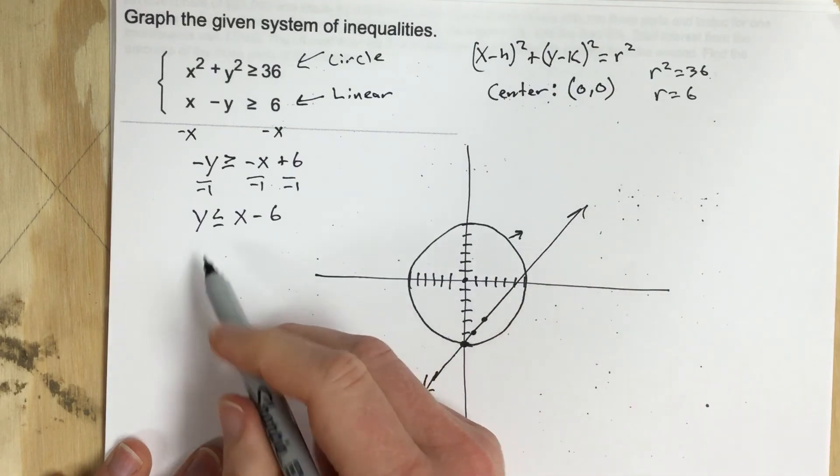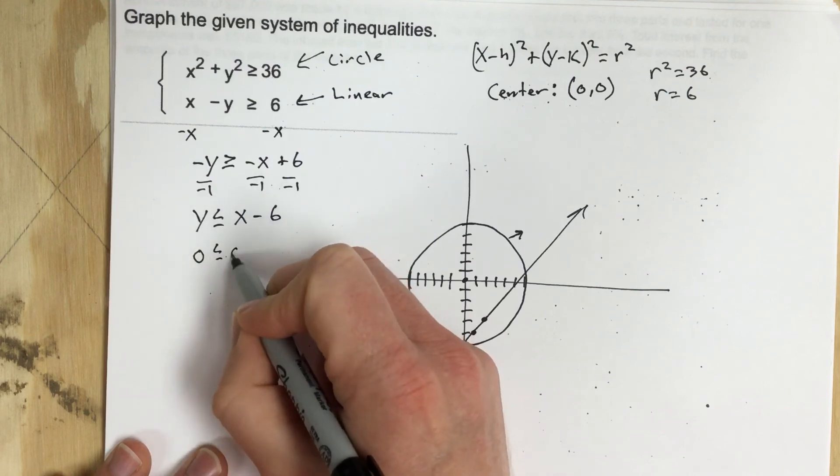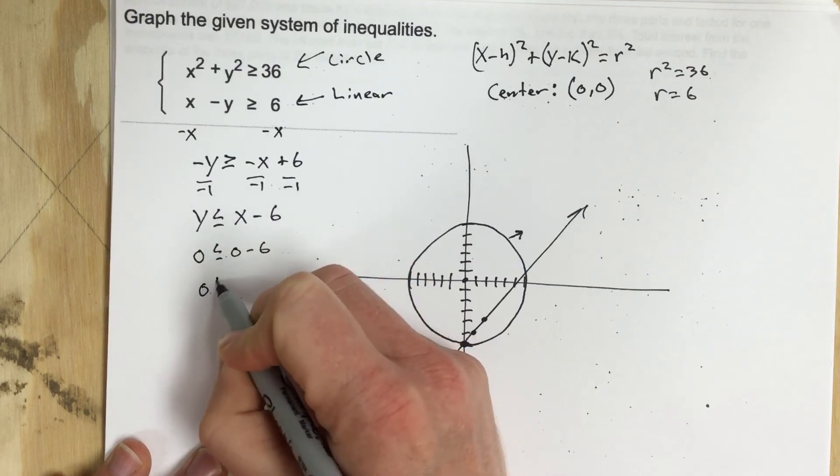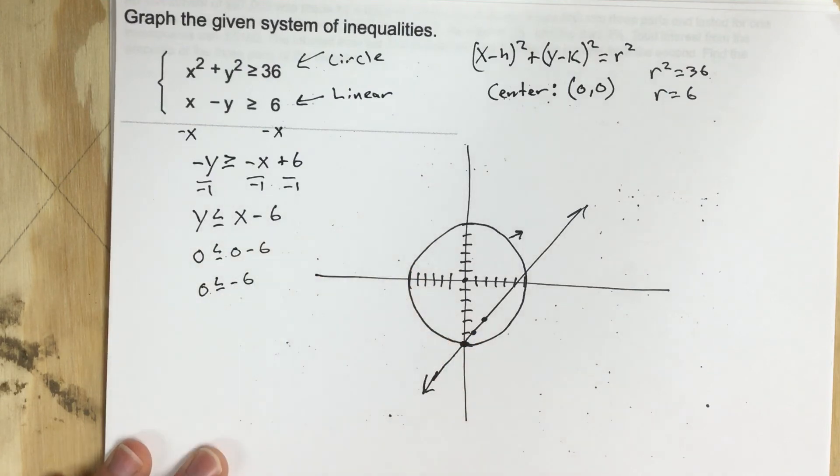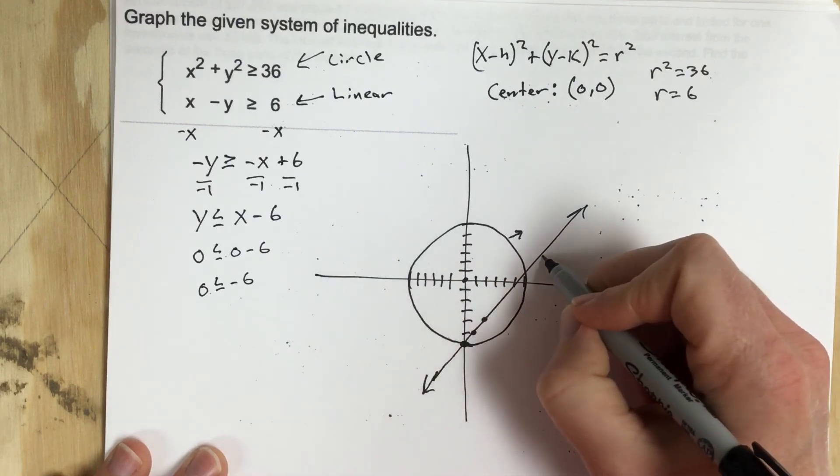Now which way do I shade this one? So I plug in 0, 0. Is 0 less than or equal to negative 6? No. So 0, 0 is not a solution so we're going to be shading it this way.